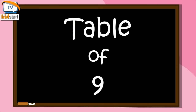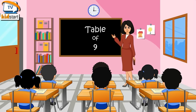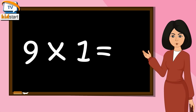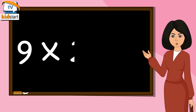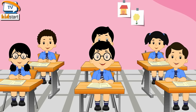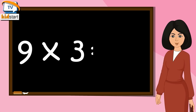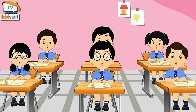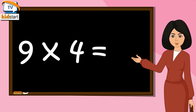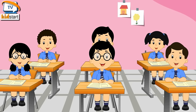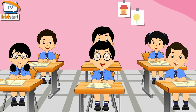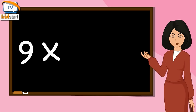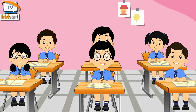Table of Nine. Nine ones are nine. Nine twos are eighteen. Nine threes are twenty-seven. Nine fours are thirty-six. Nine fives are forty-five. Nine sixes are fifty-four. Nine sevens are sixty-three.